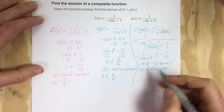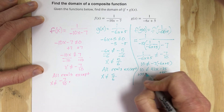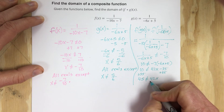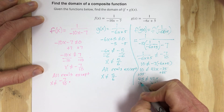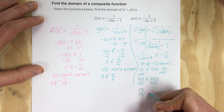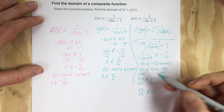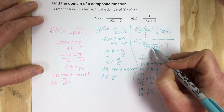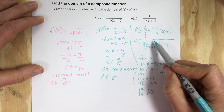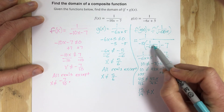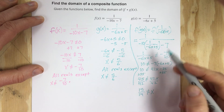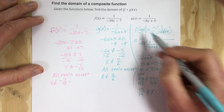Adding 35 to each side gives 45 cannot equal 42x. Dividing by 42 and reducing, we get x cannot equal 15 over 14. So if x equals 15 over 14, that would make g of x equal to negative 7 tenths, which would then give 0 in the denominator of f. So x cannot equal 15 over 14 is a domain restriction for f of g of x.